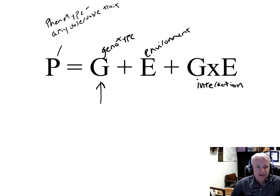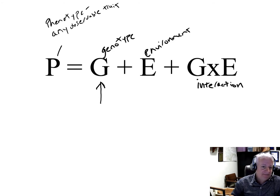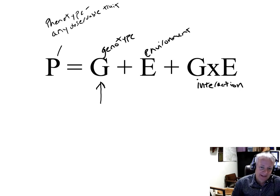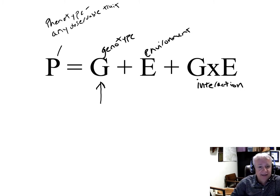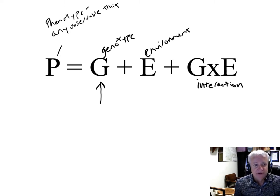If most or all of the control of a particular phenotypic trait is in the environment, then we can't select in the population for that trait — it's expressed primarily based on the environment the plant is grown in, so there's really no use in breeding for it. But if there's some trait that's under some degree of genetic control, then we can select individuals that are more likely to produce a particular phenotype or desirable trait.